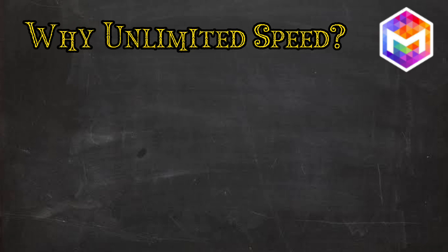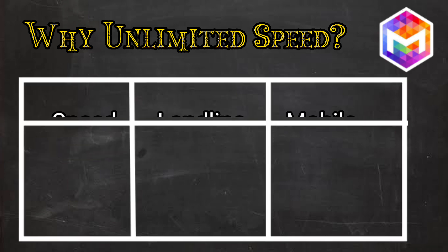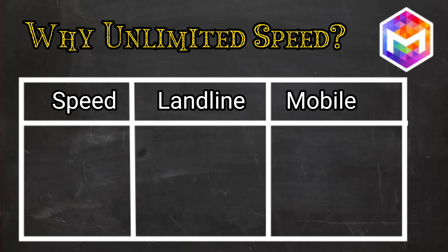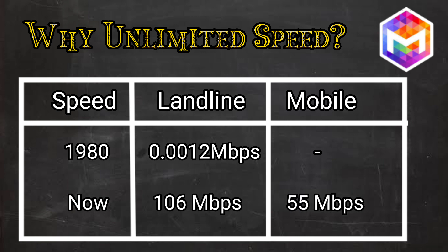Why do we need unlimited speed? Mojak believes the blockchain industry will follow the revolution of the internet industry. In the 1980s, when the internet was at its initial stage, the speed of landline internet was only 12 BPS, or 0.0012 megabits per second. Nowadays, the average speed on fixed connections is more than 100 megabits per second, while the average mobile internet speed is more than 50 Mbps. The speed has increased hundreds of thousands of times in the last three decades.